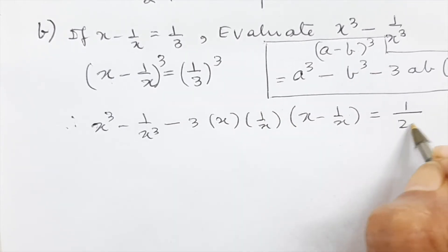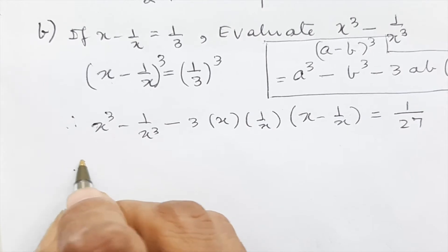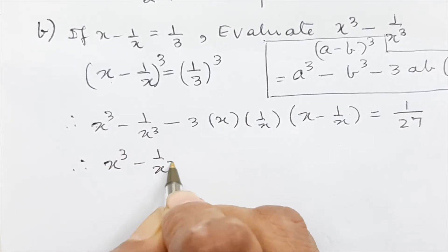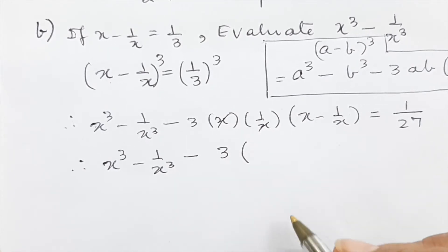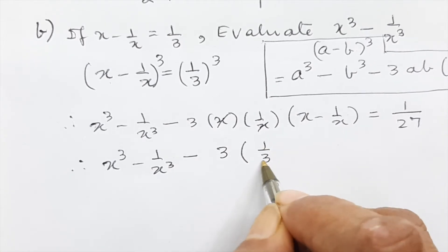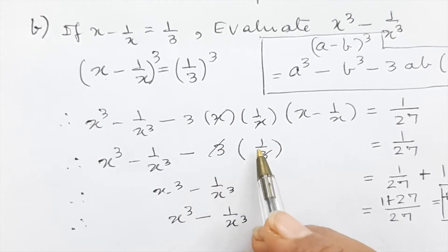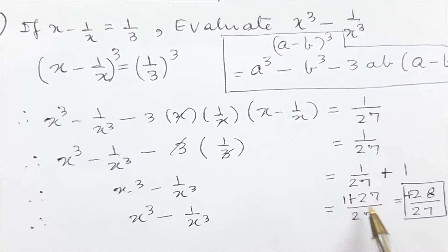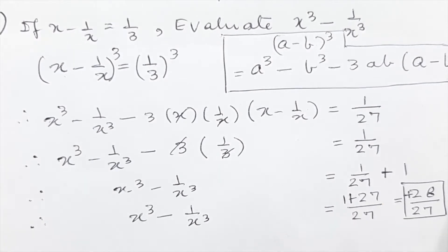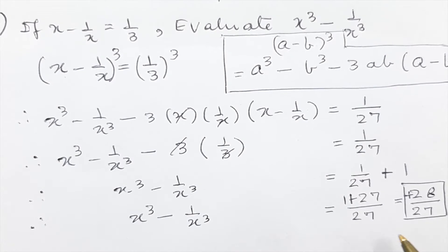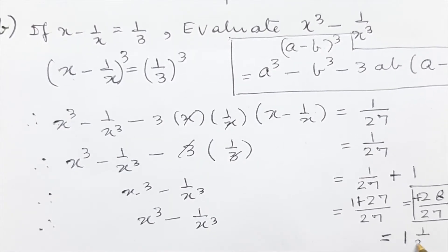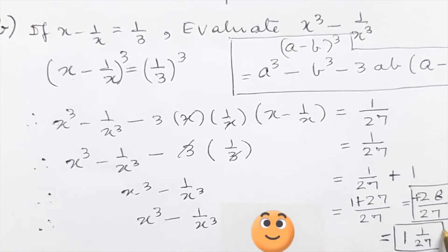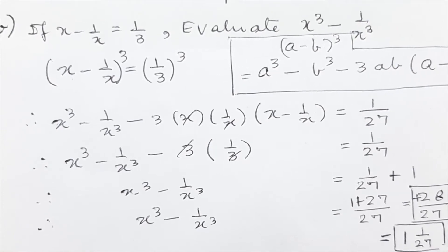1³ = 1 and 3³ = 27. Therefore x³ − 1/x³ − 3 · (1/3) = 1/27. Transposing, we get x³ − 1/x³ = 1/27 + 1 = 28/27, which we write as the mixed fraction 1 and 1/27 as our final answer.